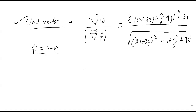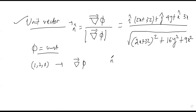If they ask to find the perpendicular vector or unit normal at a specific point, for example at (1, 2, 0), you simply substitute x=1, y=2, z=0 into the final expression for ∇φ or n̂ and write the numerical value.